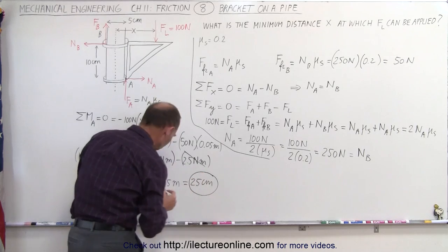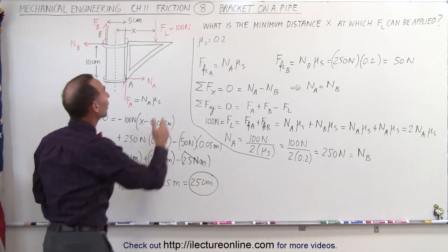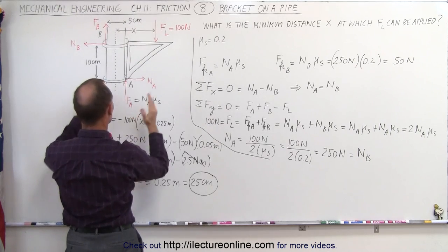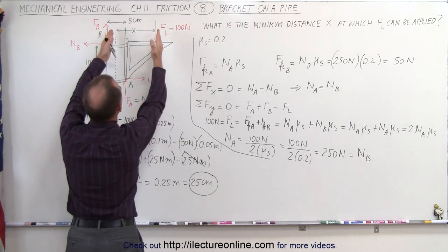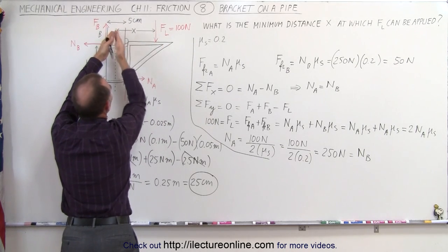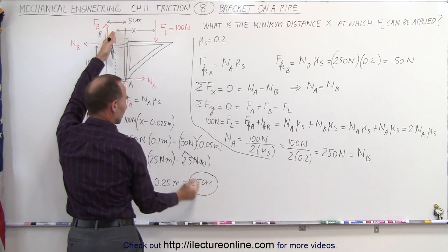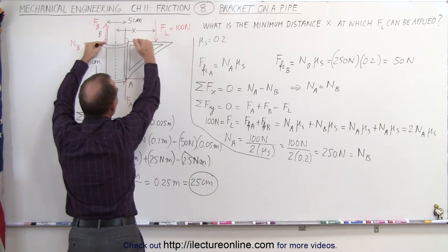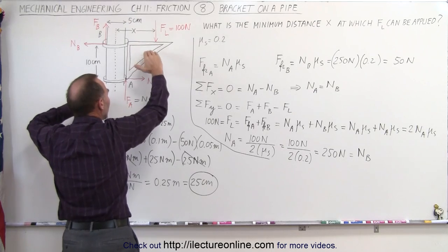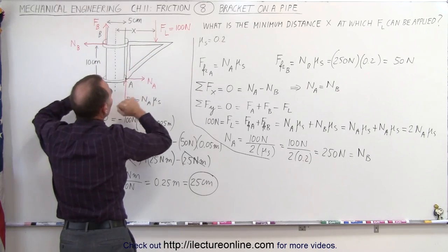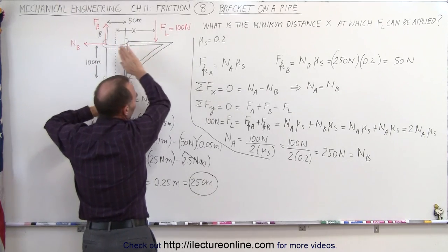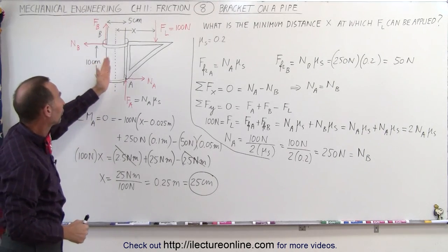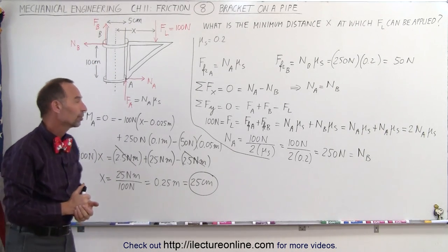So that's the closest you can apply the 100 newton load force. Note that x is measured relative to the center of the pipe. The closest you can get is 25 centimeters. If you get within 25 centimeters, the bracket will begin to slide because you're not applying enough torque to create enough friction force. Anything greater than 25 centimeters, the bracket will hold — the friction force will hold up the load force.